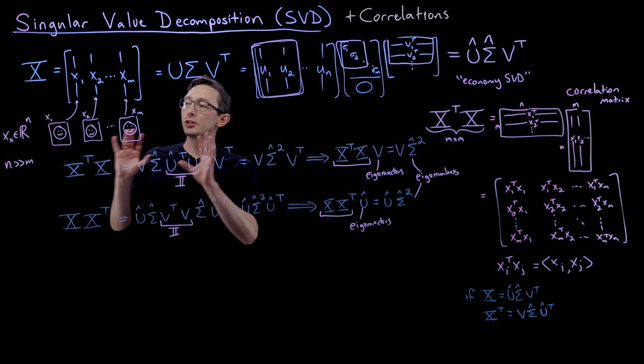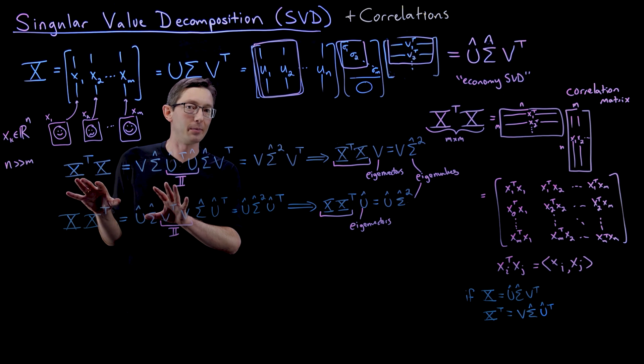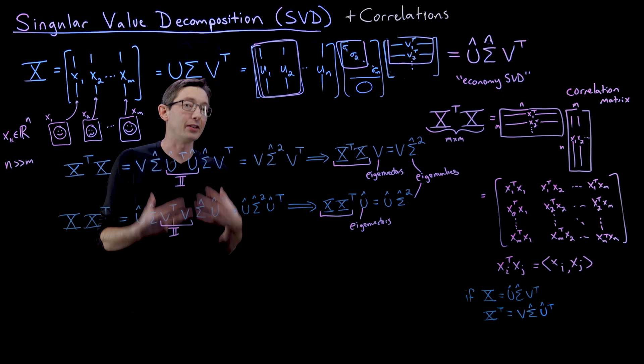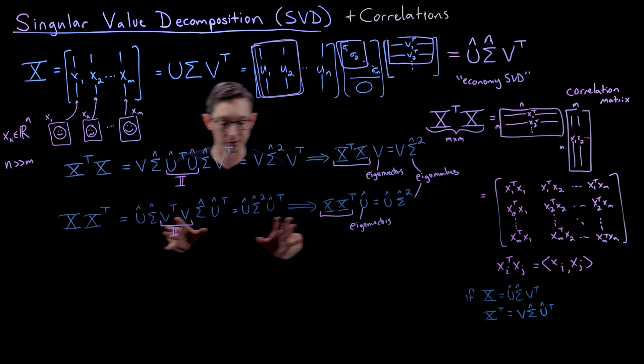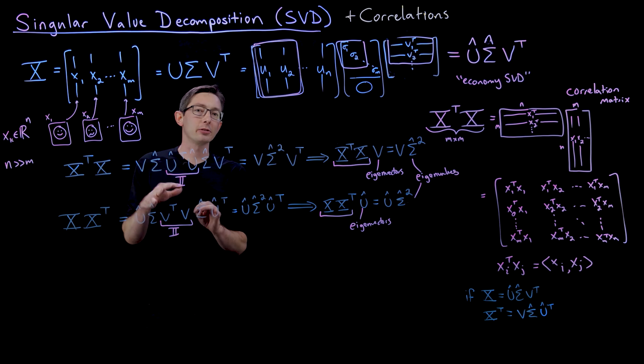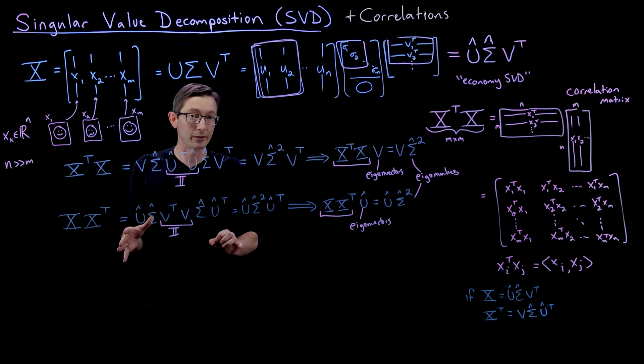Welcome back. We just derived this nice interpretation of the singular value decomposition in terms of the eigenvalues and eigenvectors of these correlation matrices, these column-wise and row-wise correlation matrices. In general, this is not actually how you want to compute the SVD—there are other more efficient ways of computing it.